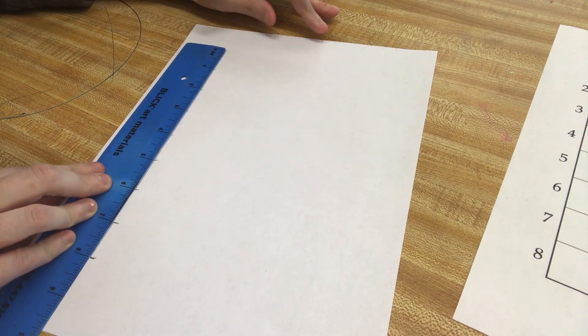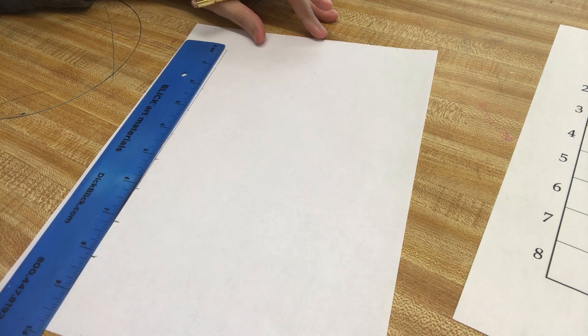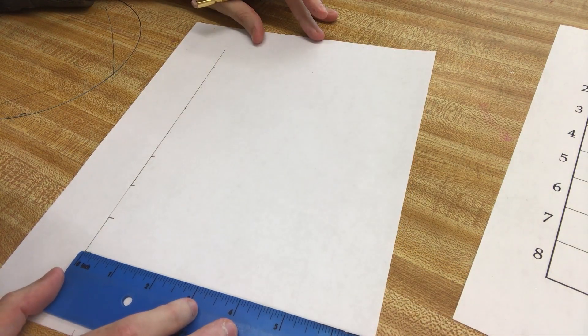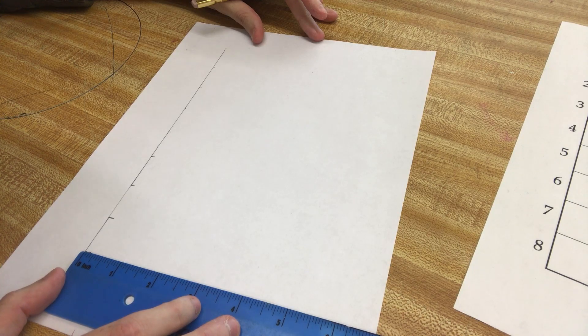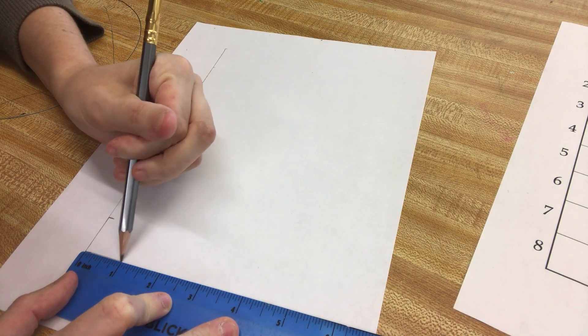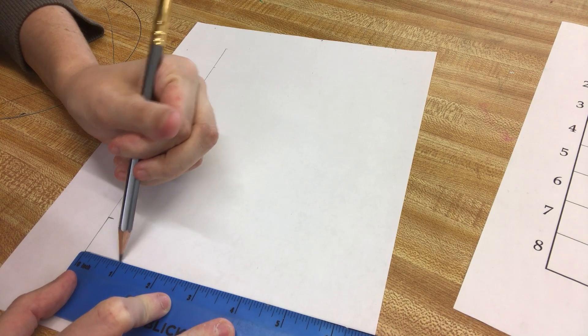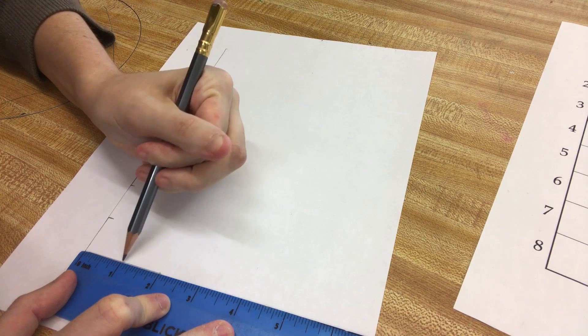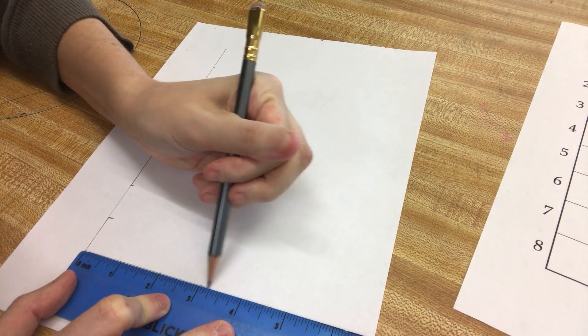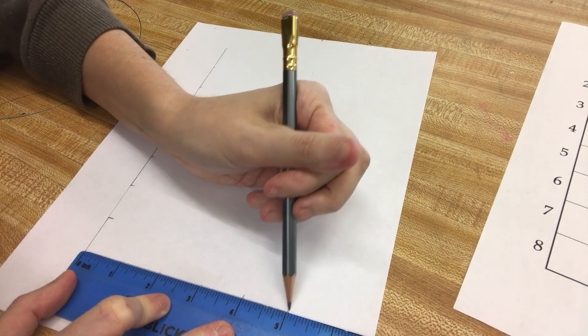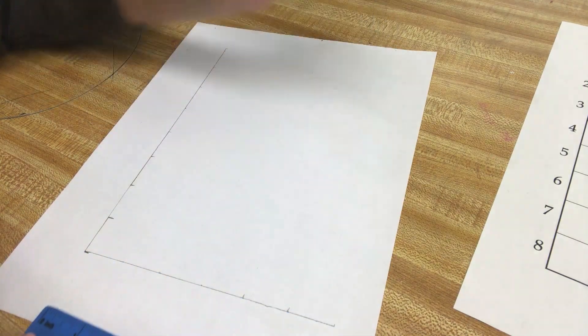Now we want it to be 6 inches wide, so I'm going to take my ruler at the bottom, and I'm going to go from the zero and make a dot at the 1, and then the 2, 3, the 4, the 5, and the 6.